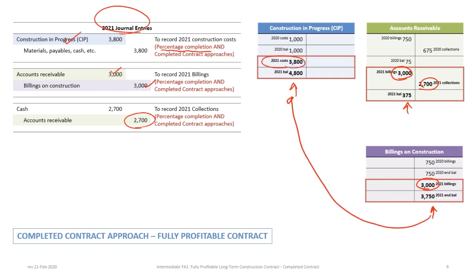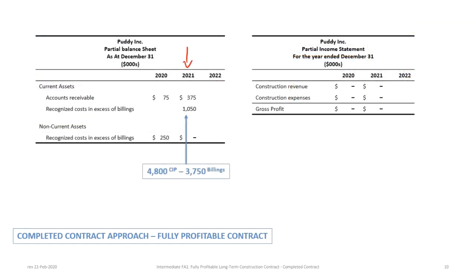These two accounts — construction in progress and billings on construction — are netted against each other on the balance sheet. For the 2021 balance sheet, we have accounts receivable of $375,000 and recognized costs in excess of billings of $1,050,000, which is the difference between the $4.8 million in construction in progress and the $3.75 million in billings. Note this is now reclassified as current because the contract ends in 2022. On the income statement, because this is the completed contract approach, there is no gross profit, revenue, or expenses recorded until the year of completion.